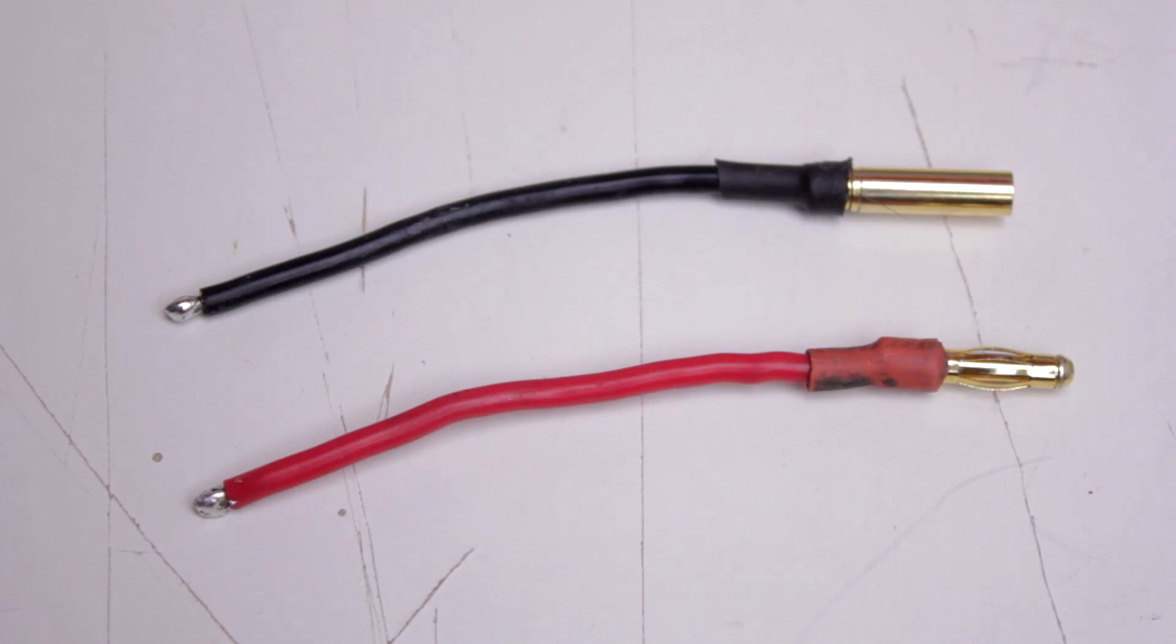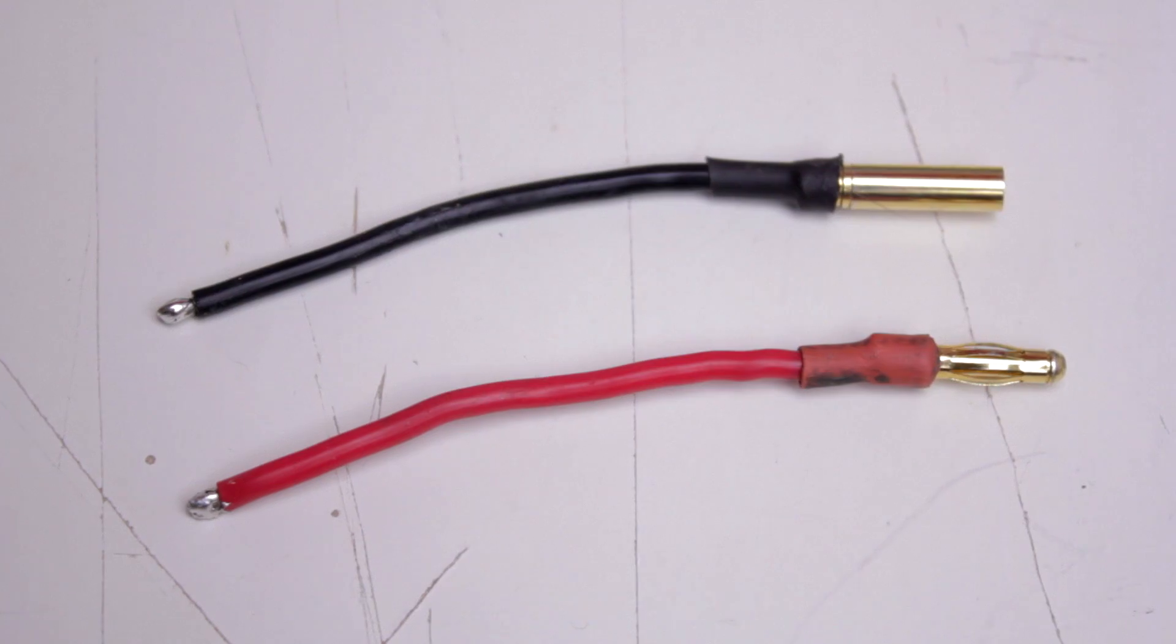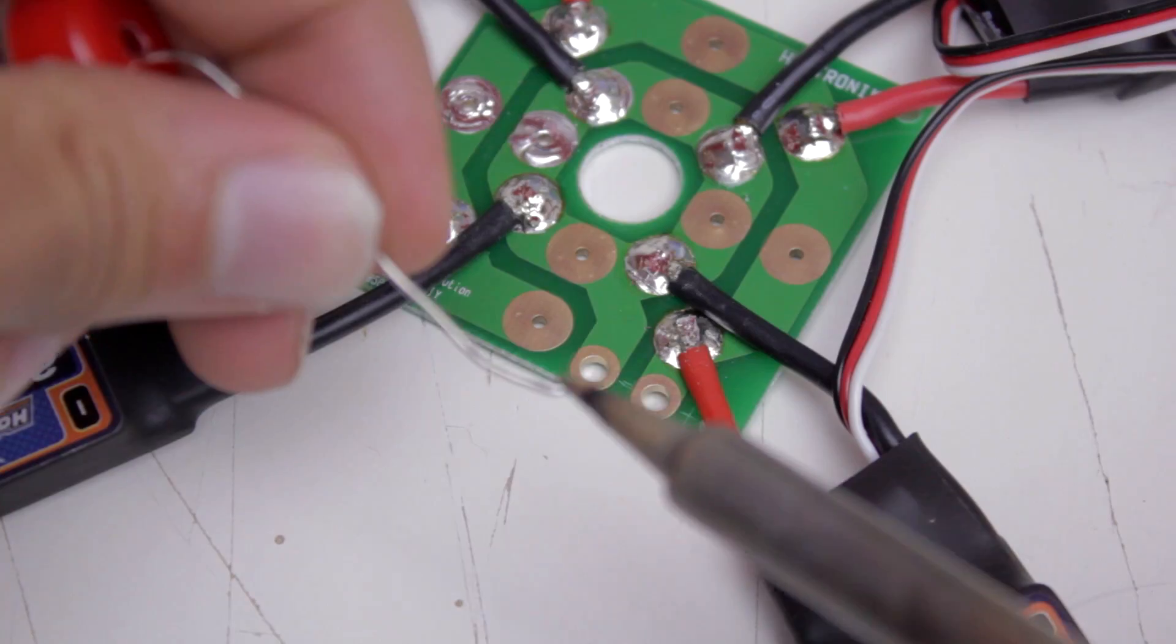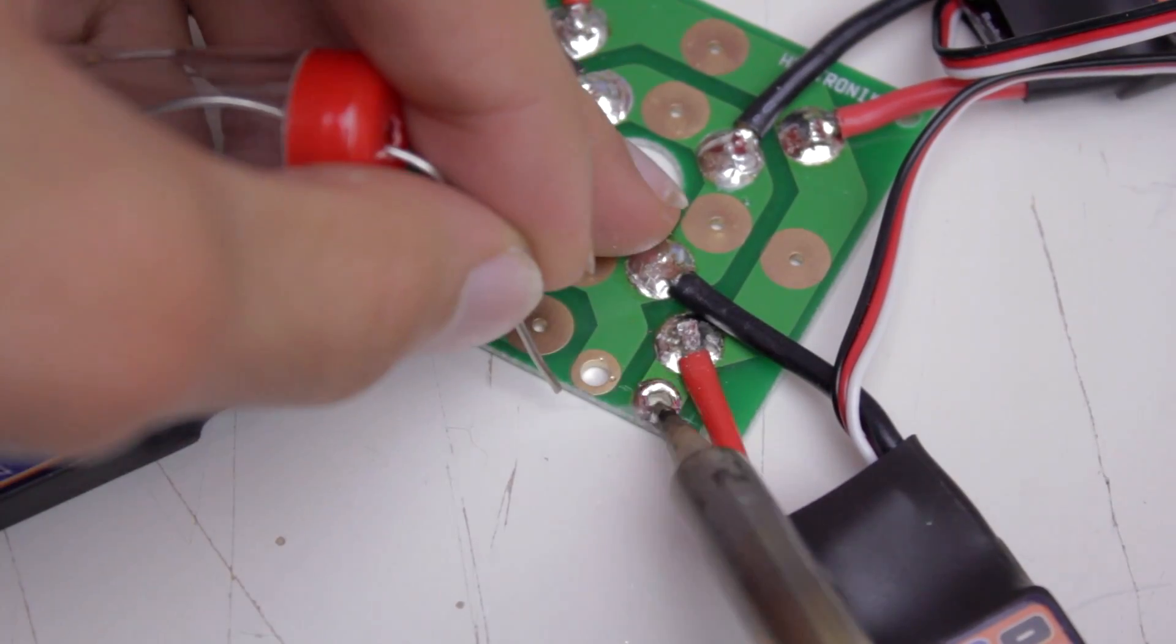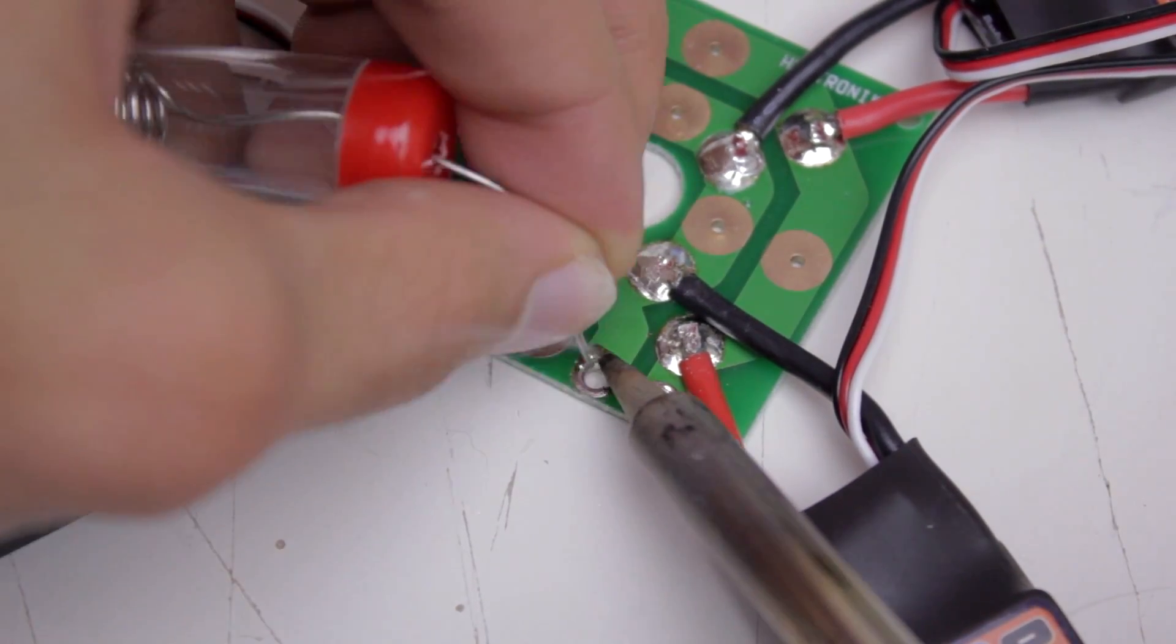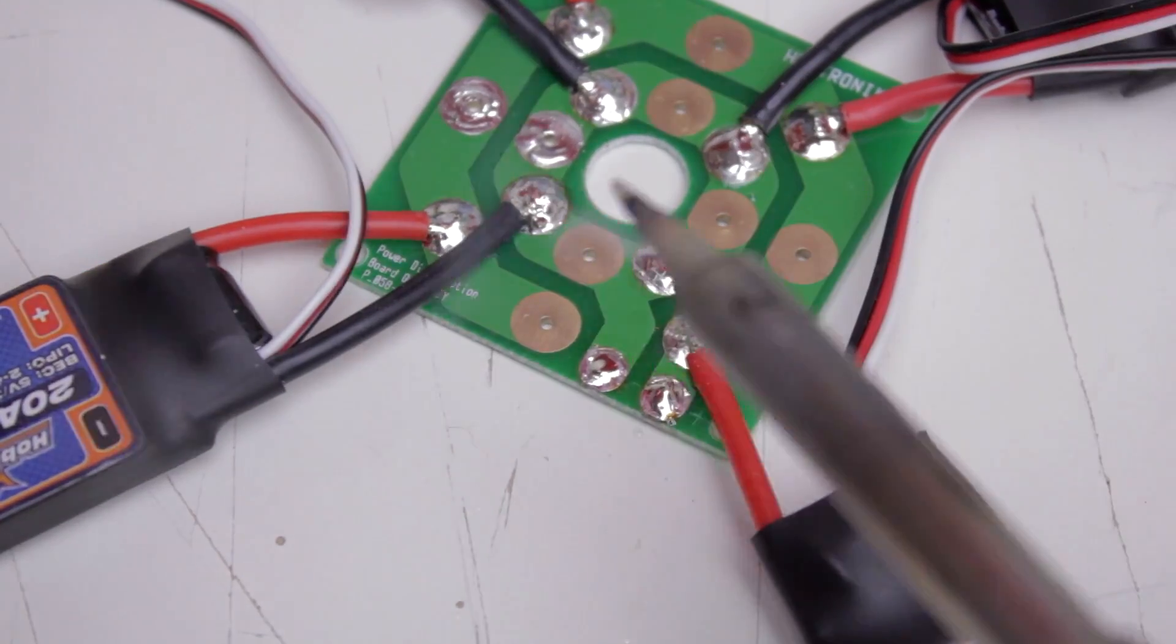If you save the wires you cut from your ESCs then you can make battery plugs with that and 4mm bullet connectors. That way it can work with banana connectors that come standard with Turnigy batteries. Or you can just buy banana connectors.